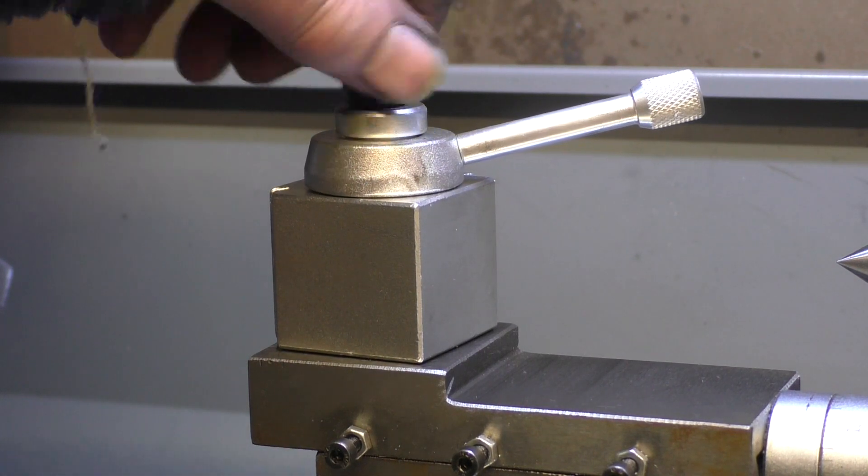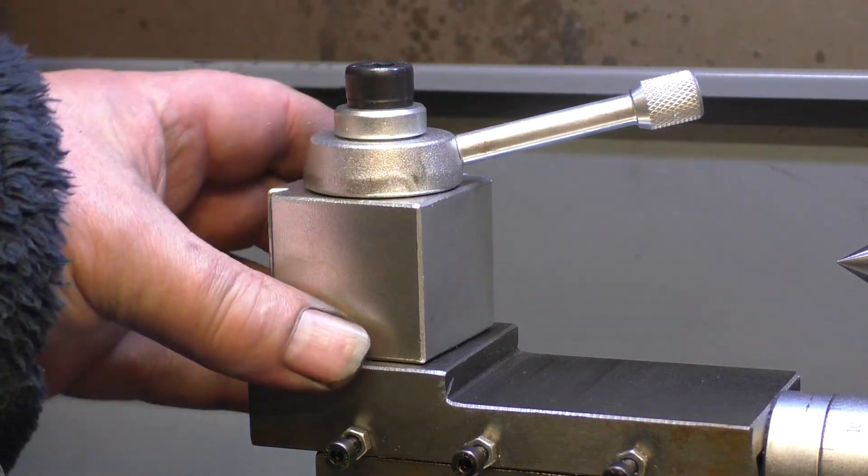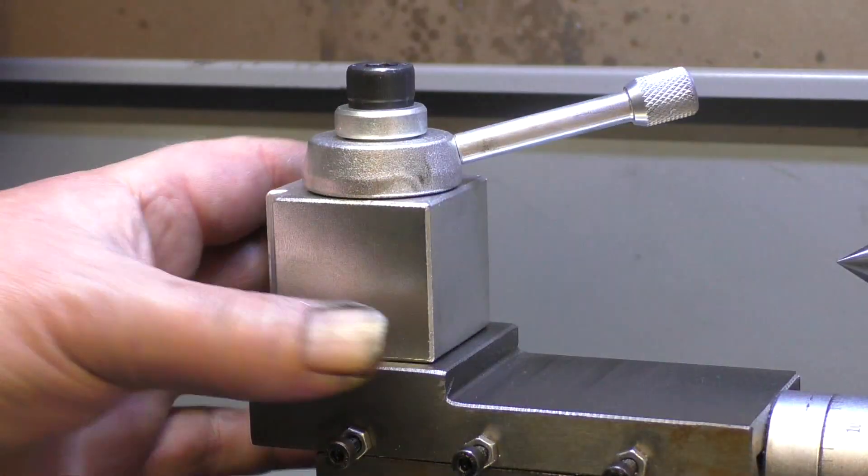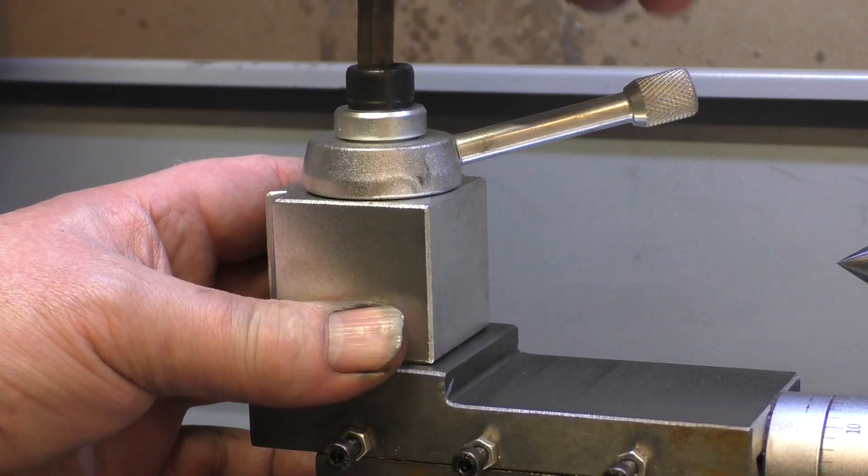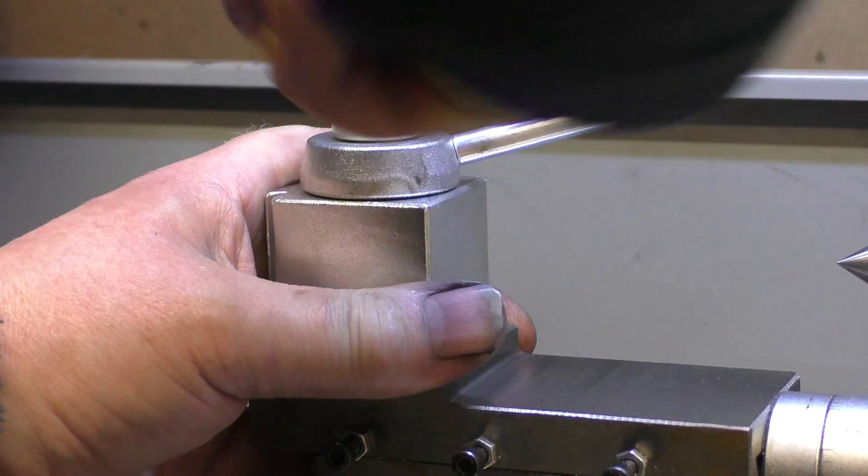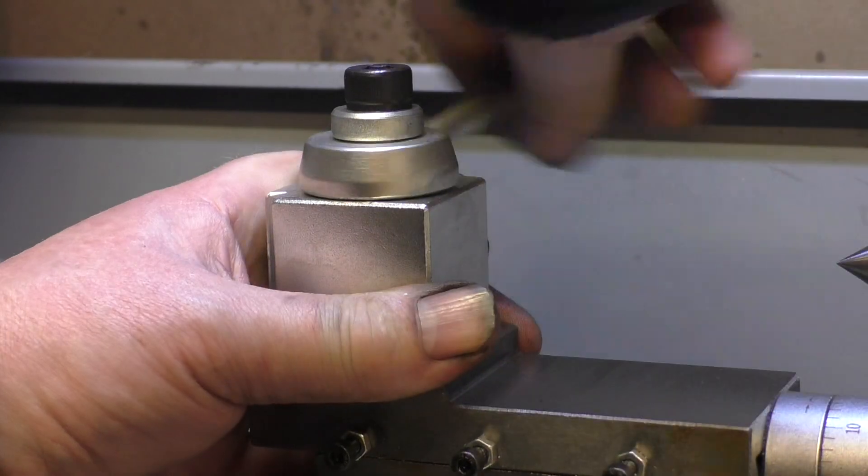You will need quite a large Allen key to tighten this down, which is supplied in the kit. Give that a good turn and lock him off, and as long as that still moves, you're fine.